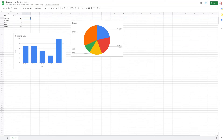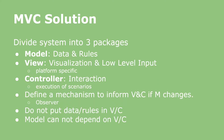You can also imagine doing this in a multi-user environment, so if any user changes any of the data, all other users' interfaces should also be updated. To solve this problem, the Model View Controller pattern proposes that we divide the system into three major packages or modules. First, we have the model — here we put data and business rules, much like in the model view separation principle. Next, we have the view — here we have visualization and low-level input.